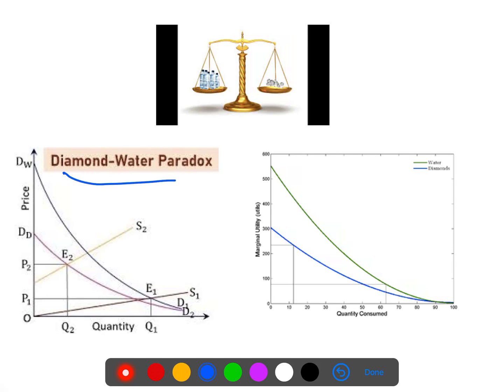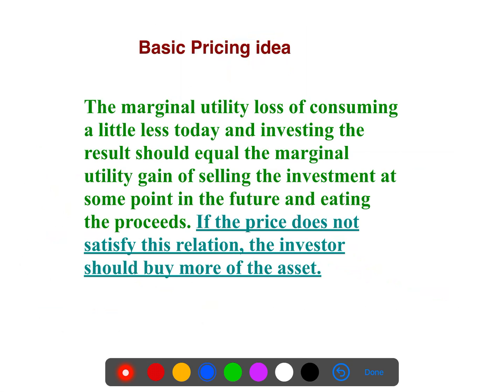You know the diamond water paradox of Adam Smith. The basic pricing idea is that the marginal utility loss of consuming a little less today and investing the result should equal the marginal utility gain of selling the investment at some point in the future and eating the proceeds. If the price does not satisfy this relation, the investor should buy more of the asset.